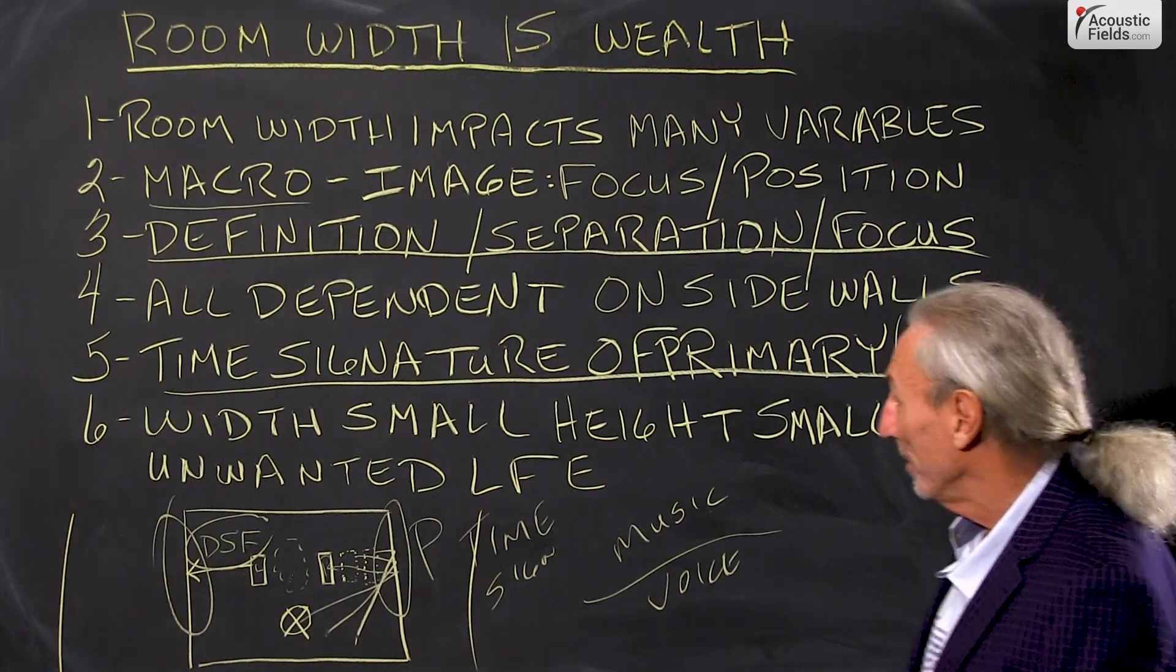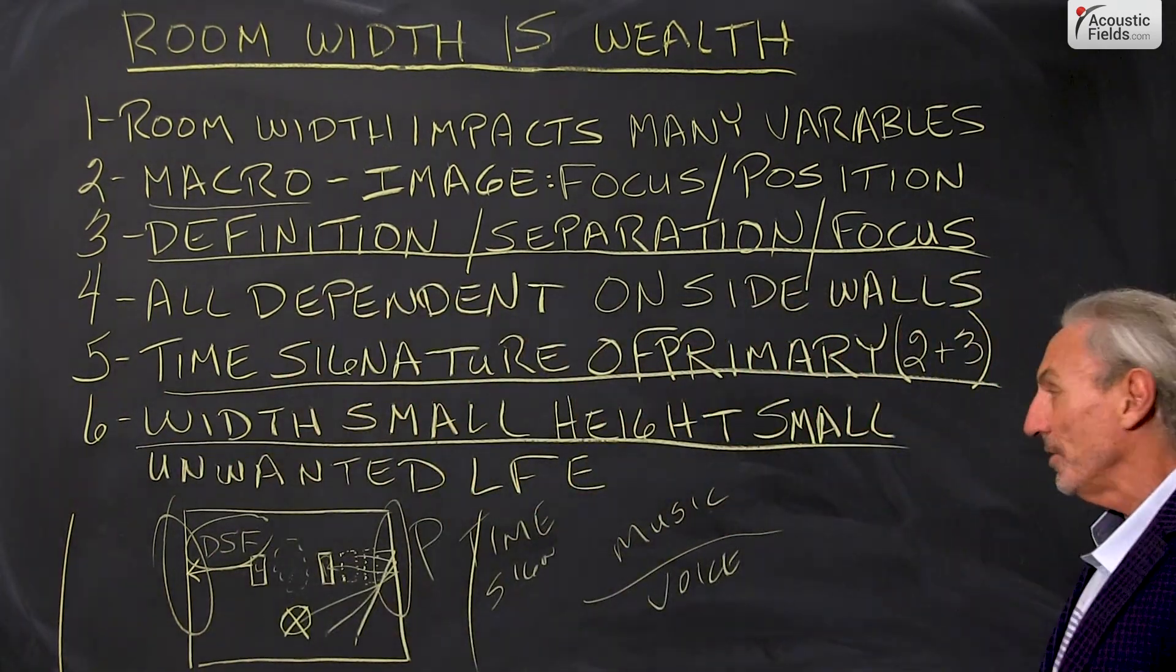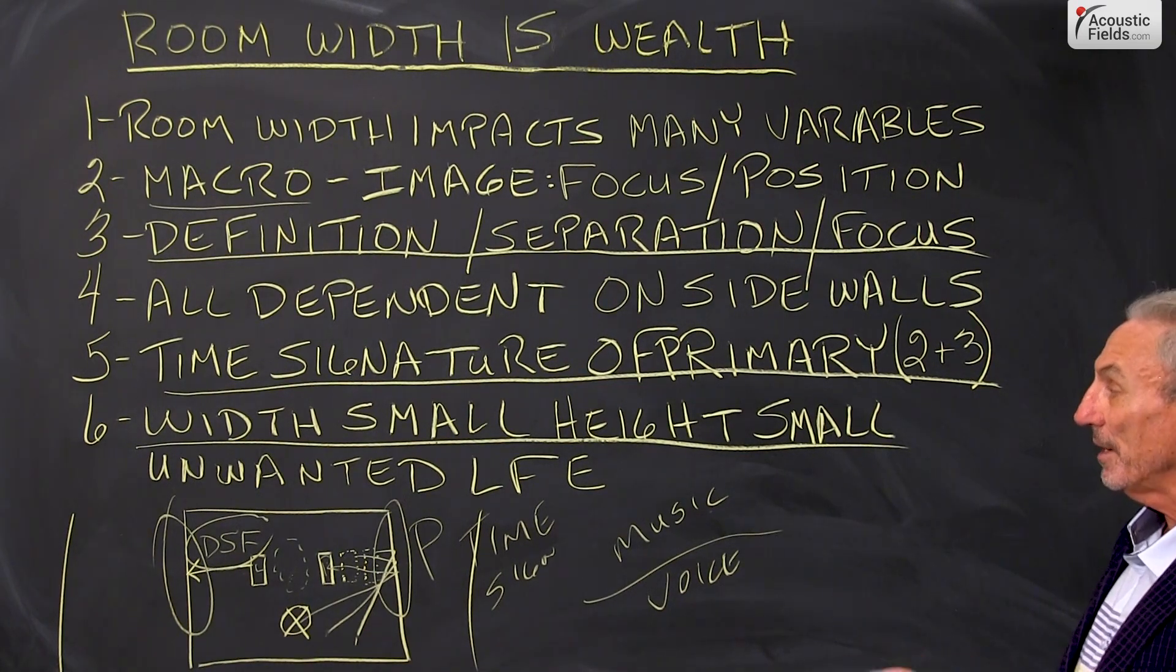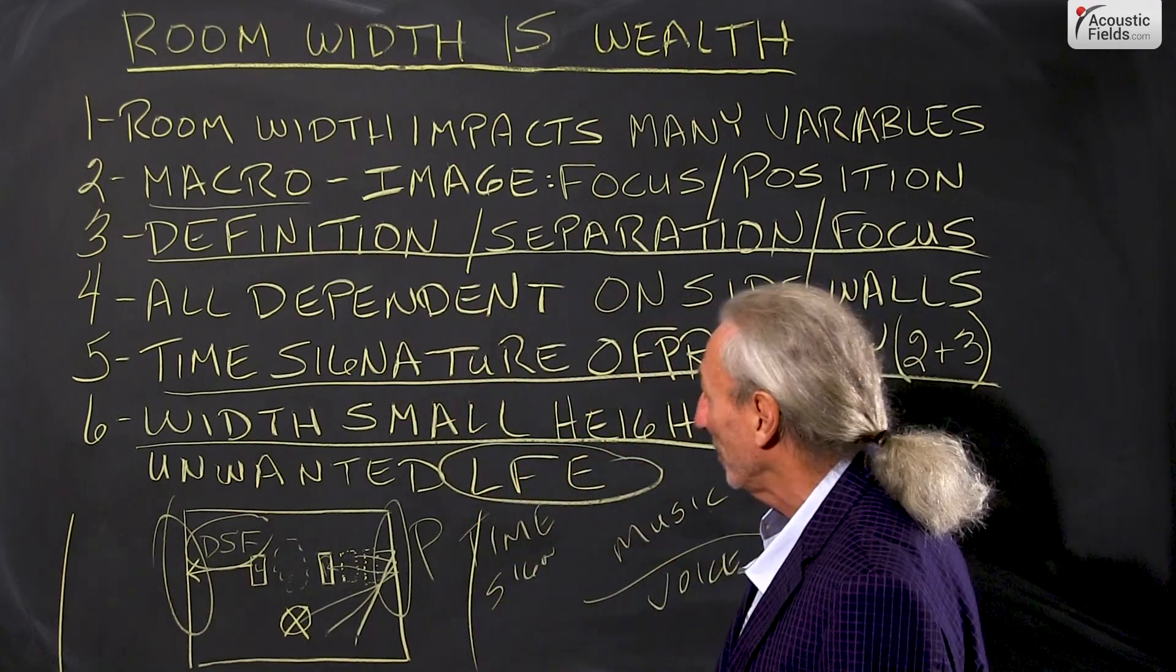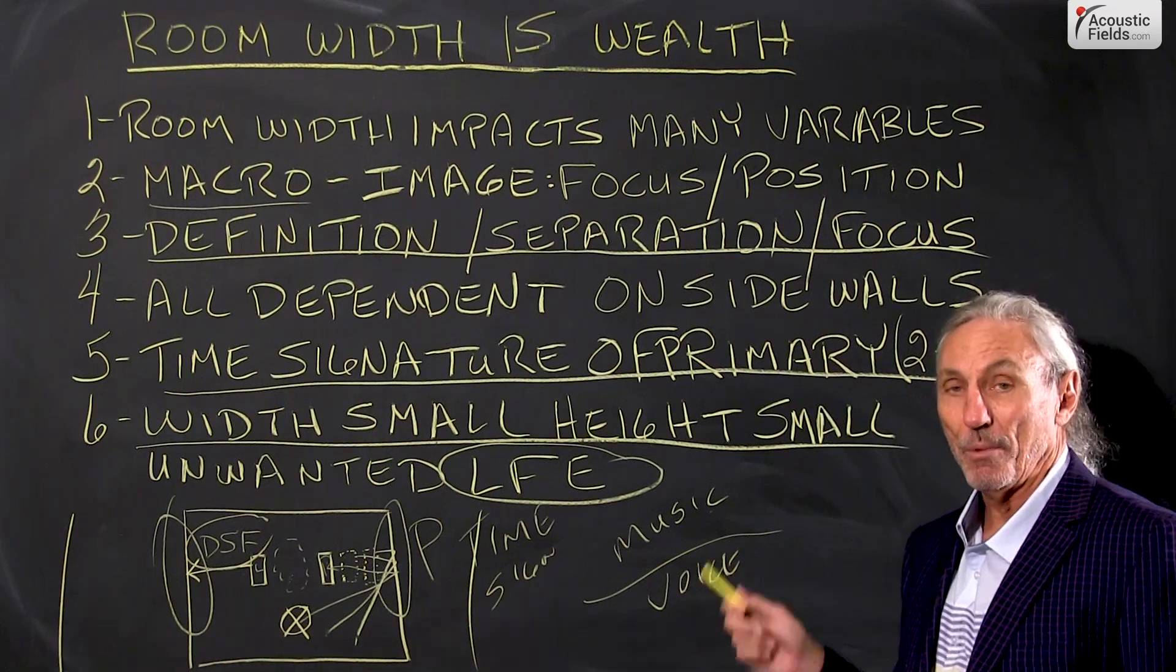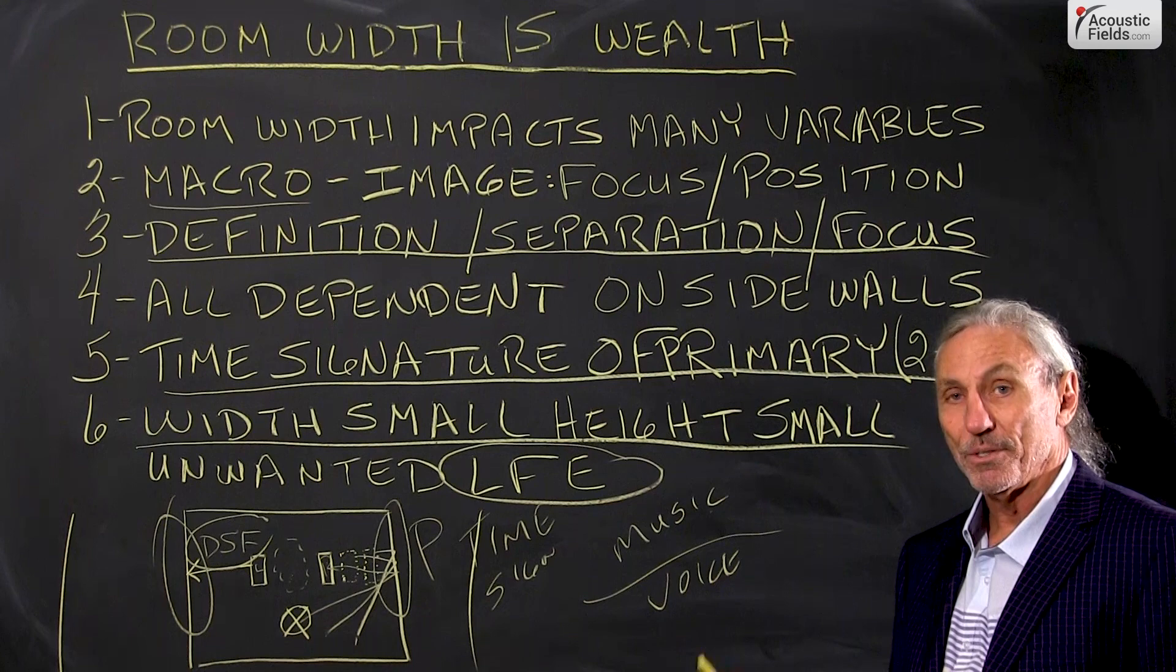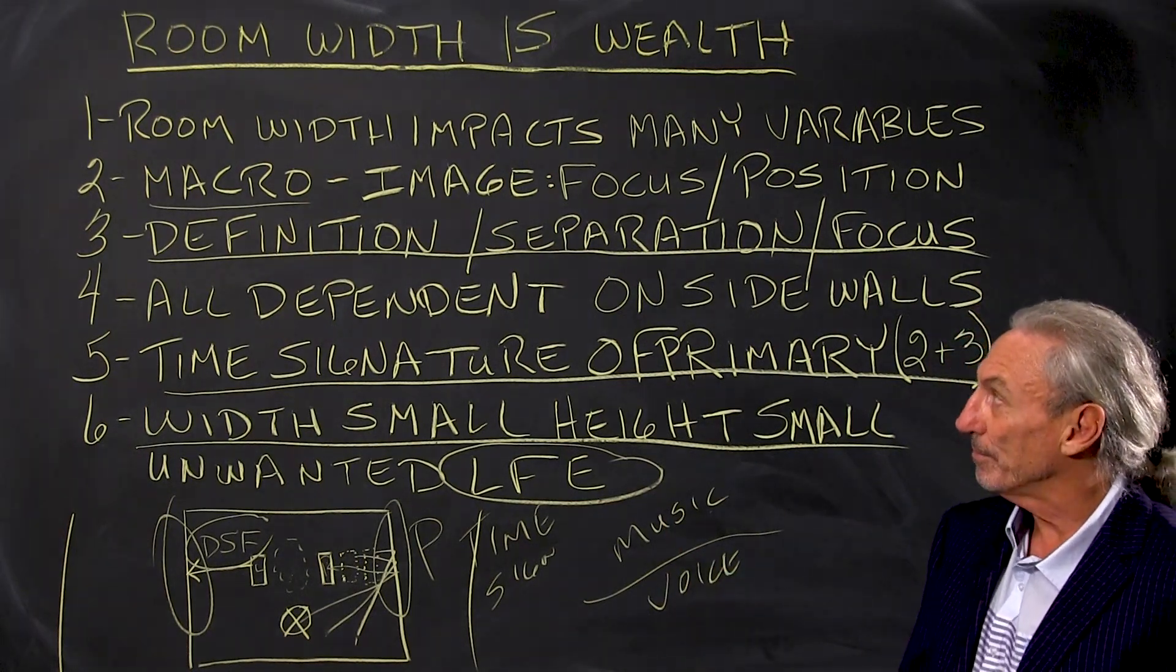We know that width height ratio is really small sometimes in our rooms so we have to be really careful there because then we add all kinds of low frequency pressure issues into the room. So room width is wealth. If you have to have a dimension that's one that's large, let's look for the width, especially with our two channel systems.